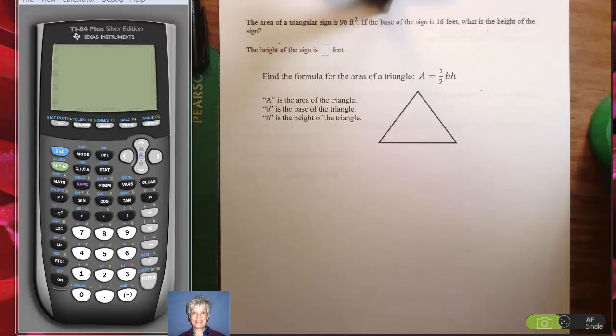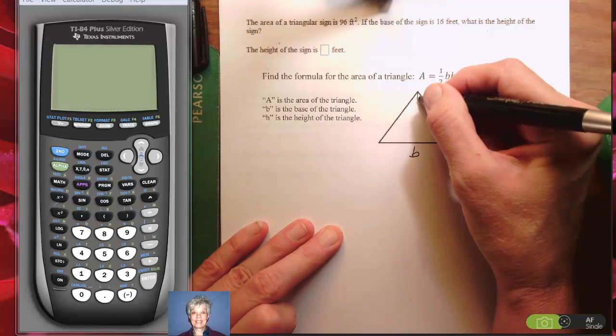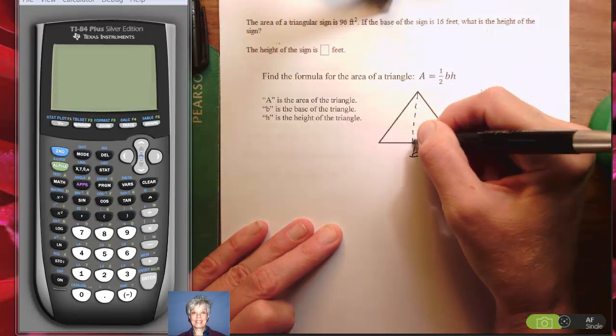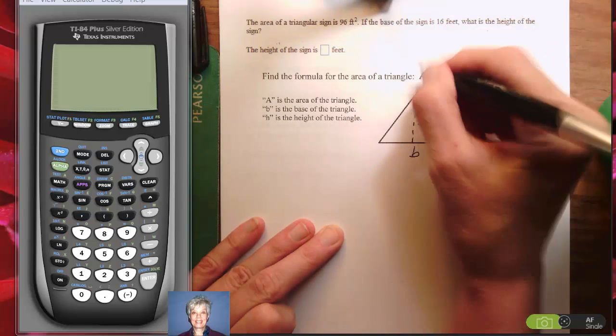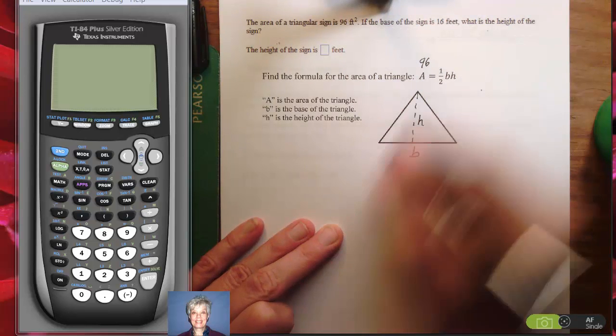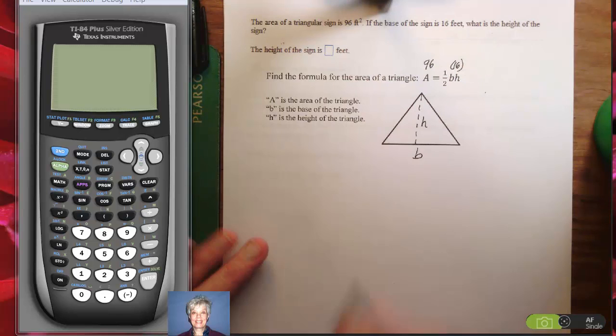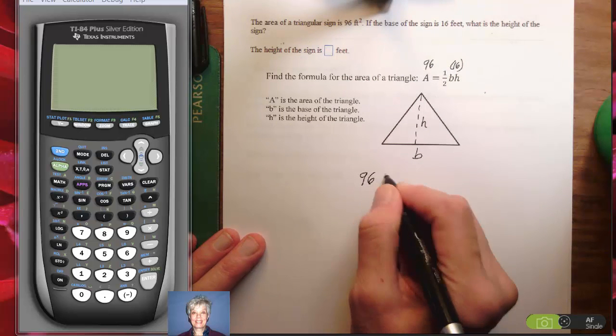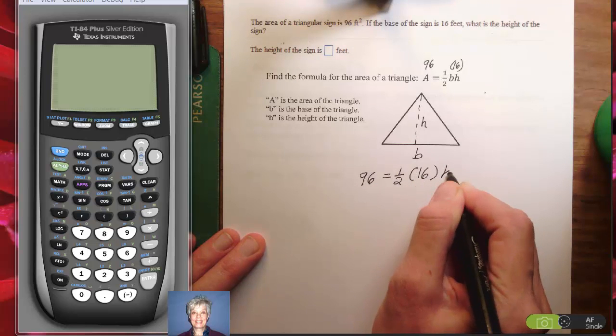A equals one-half bh, where b is the base of the triangle and h is the height of the triangle. We're told that A is 96 and we're told that b is 16. So let's rewrite the formula as 96 equals one-half times 16 times h.